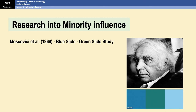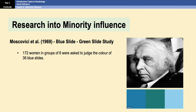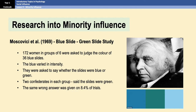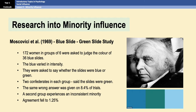The study was called the Blue-Green Slide Study, done in 1969. Moscovici had 172 women put into groups of six and shown 36 blue slides, where the blue always varied in intensity. The women were asked if the slides were blue or green. Within each group of six, there were two confederates who consistently said the slides were green. Moscovici found that participants agreed to the wrong answer on almost 8.5% of the trials. In a control group where the confederates were inconsistent — sometimes saying green, sometimes blue — participants only agreed to an incorrect answer on 1.25% of the trials, which shows the importance of a consistent minority.